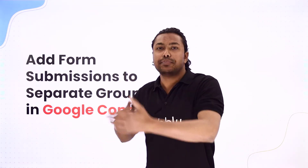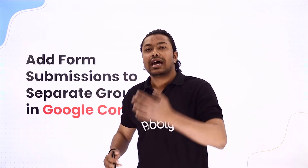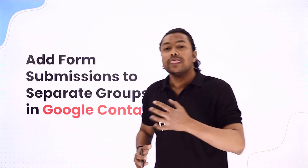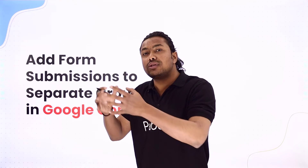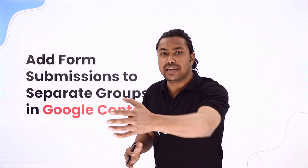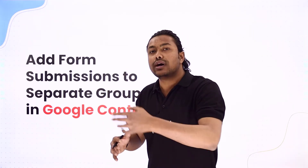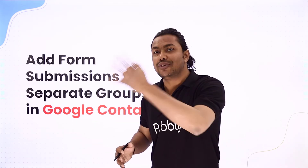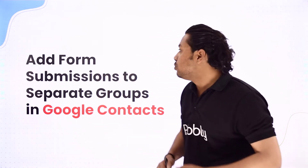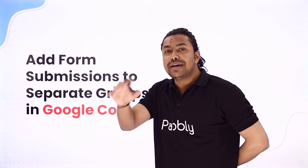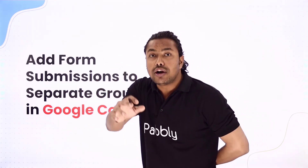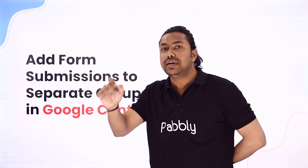Suppose you have three products A, B and C, and people are enquiring about those products. You want to filter out the people enquiring for product A, product B, and product C separately, and add them to a separate Google Contacts list according to the specific product they enquired about.